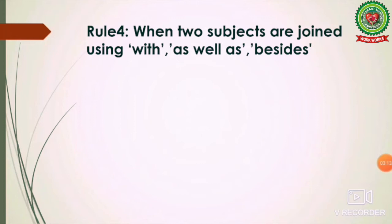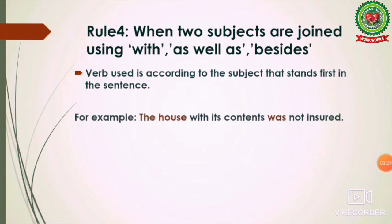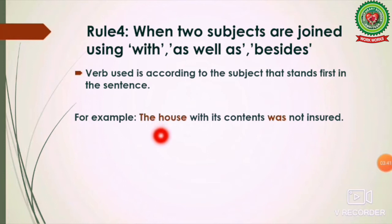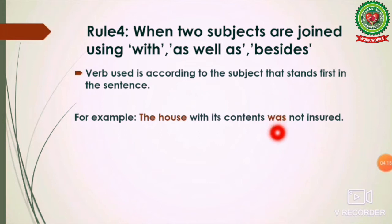The next rule: when two subjects are joined using 'with,' 'as well as,' or 'besides,' the verb used is according to the subject that stands first in the sentence. For example: 'The house with its contents was not insured.' There are two subjects — 'the house' and 'its contents' — joined by 'with.' We use the verb according to the first subject, 'the house,' which is singular, so 'was' is used, not 'were.'